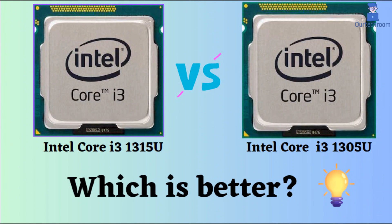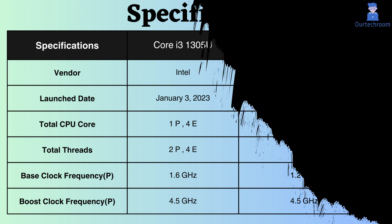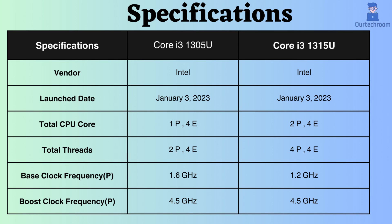In this video, I will compare the Intel Core i3-1305U and Intel Core i3-1315U, highlighting their differences, and then provide a conclusion to help you determine which one is the better choice. Both of these are Intel mid-range processors designed for thin and light laptops, and they have their own strengths as well as weaknesses. So let's look at them.